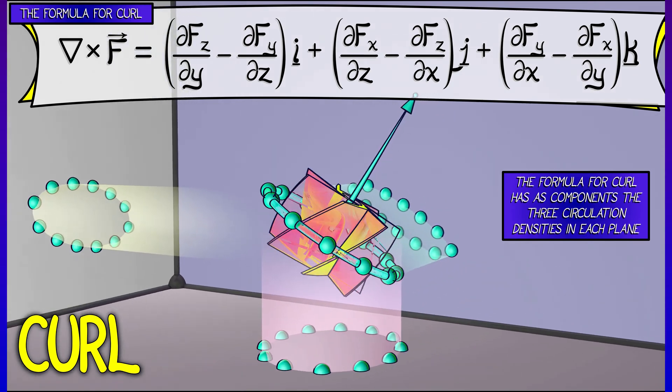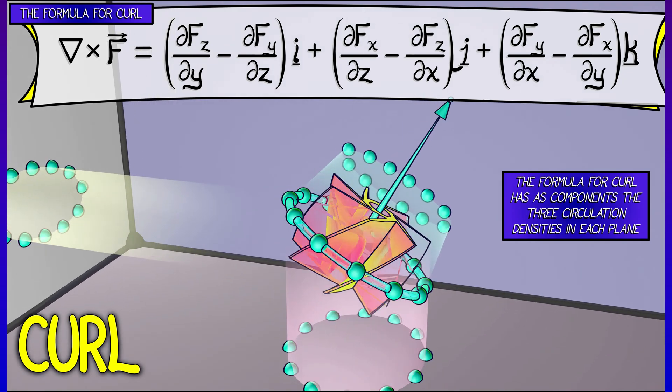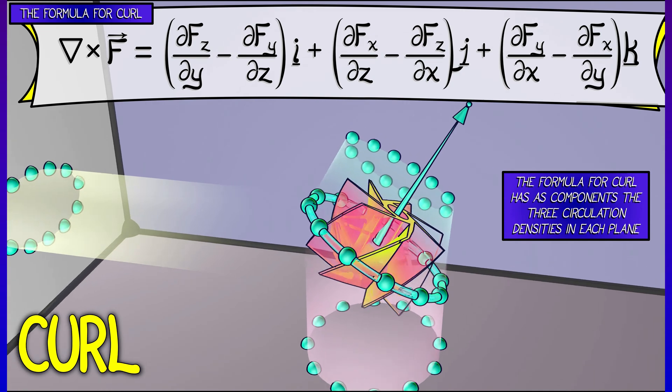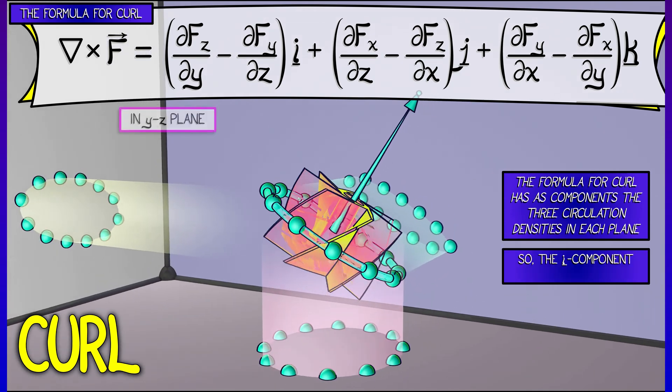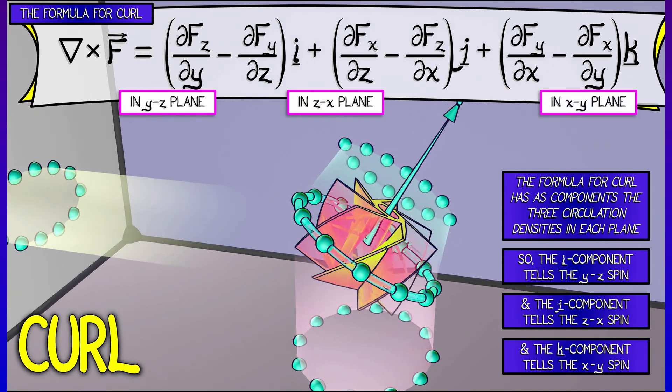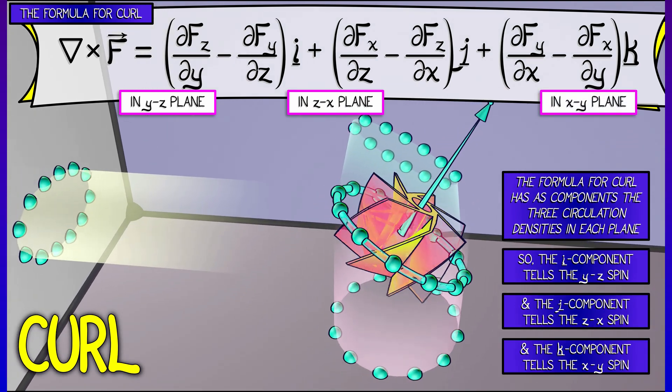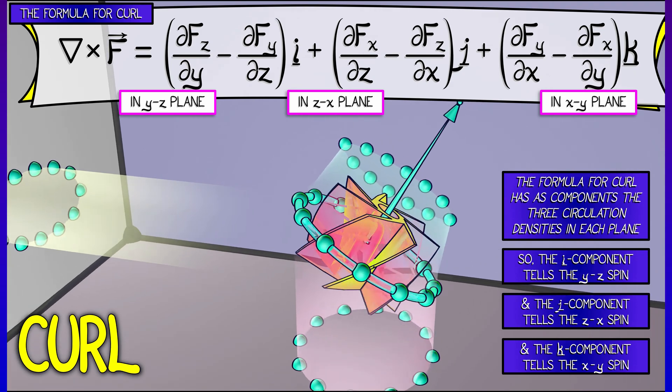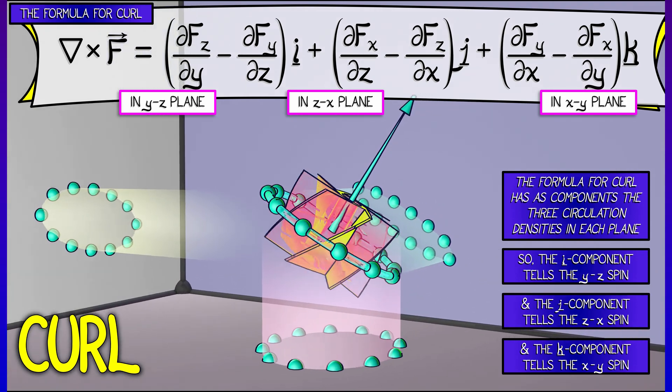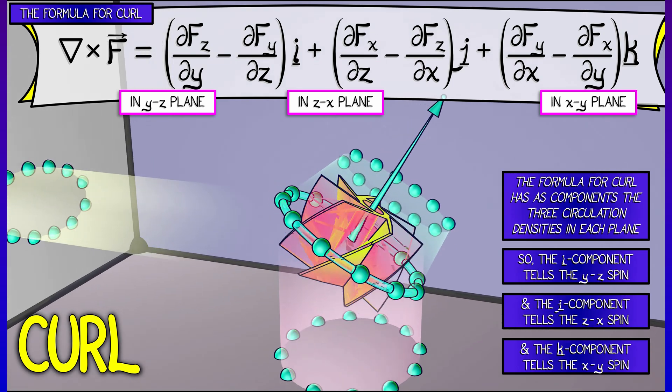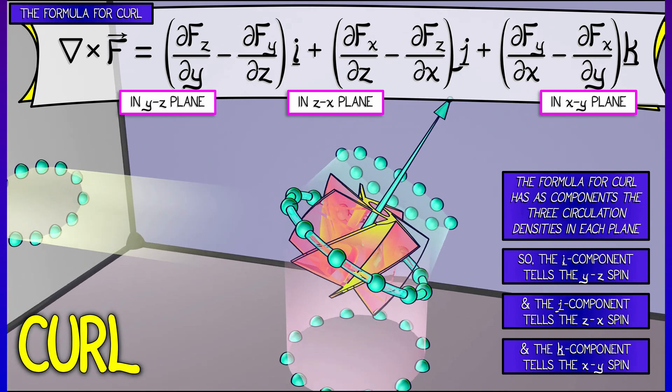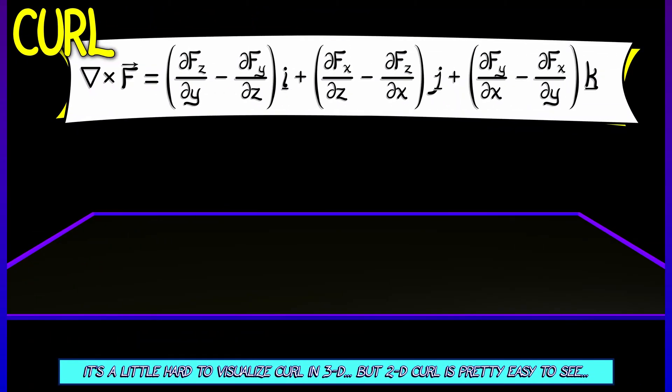For example, the K component of the curl vector field is precisely the circulation density in the XY plane. Likewise, the I component matches the YZ plane, the J component matches the ZX plane. This is where the formula comes from, and this is what it means. It's measuring three different circulations in three different coordinate planes, but you put it all together into a vector field.